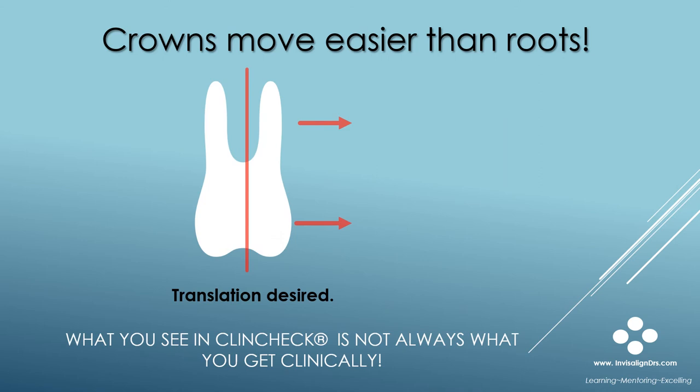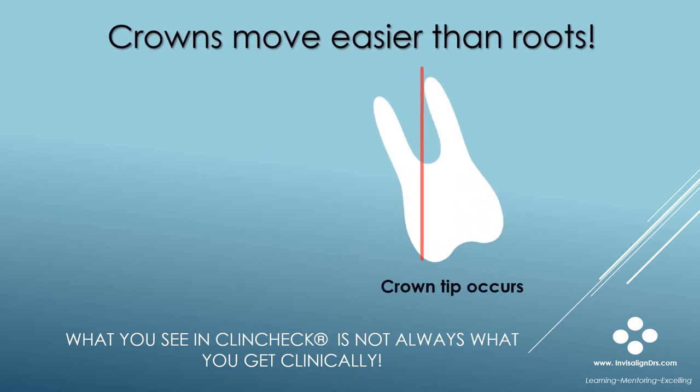Understanding that crowns move easier than roots, what are we going to see clinically when translation is programmed into a treatment plan? The root movement lags behind the crown movement, resulting in clinical crown tip. This may explain why you see flaring or buccal crown tip of posterior teeth when a lot of expansion is programmed into a ClinCheck.